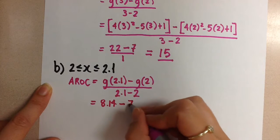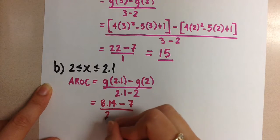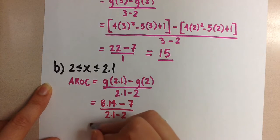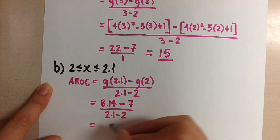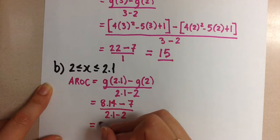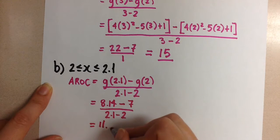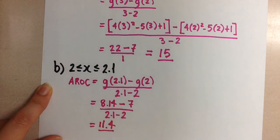Then over 2.1 minus 2. And when we subtract and then divide, we're going to get 11.4 as the rate of change now along this smaller interval.